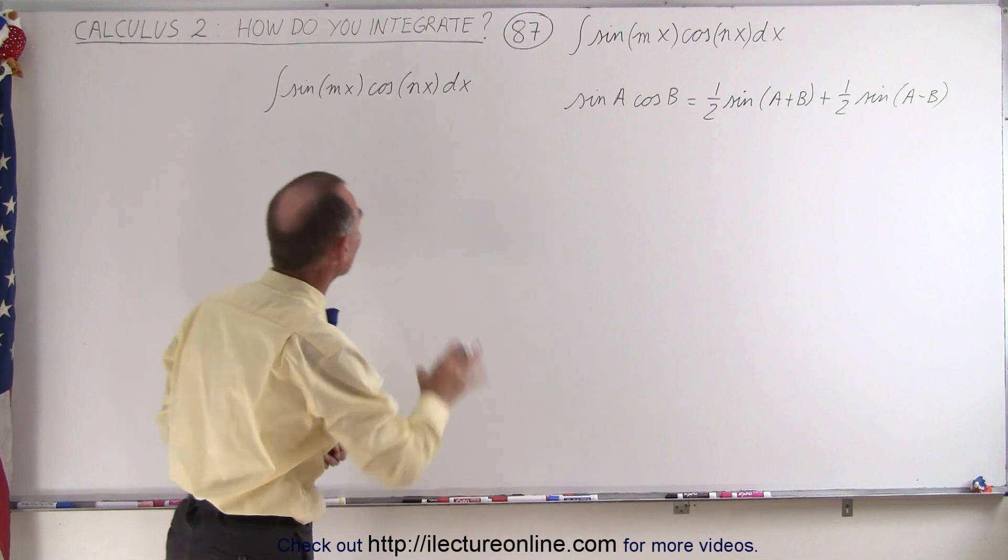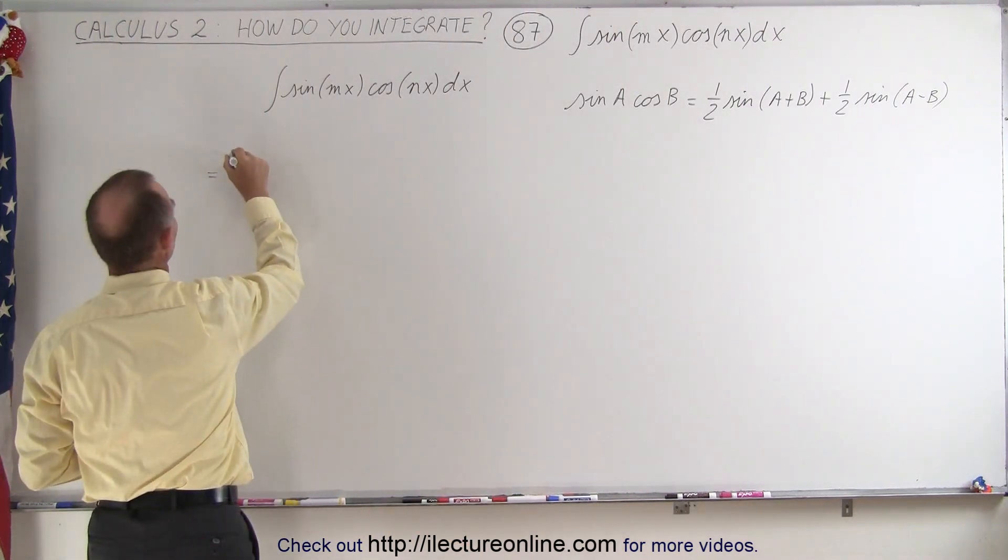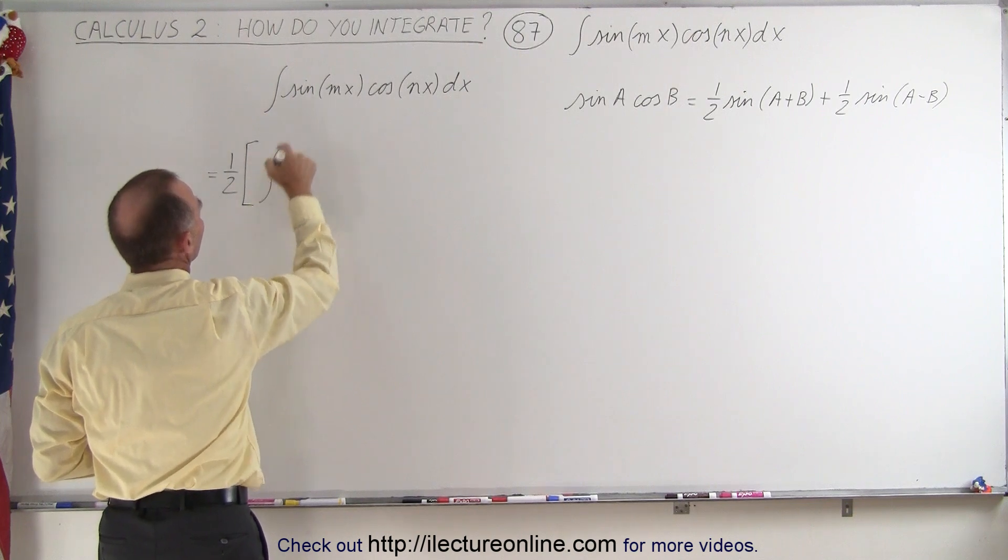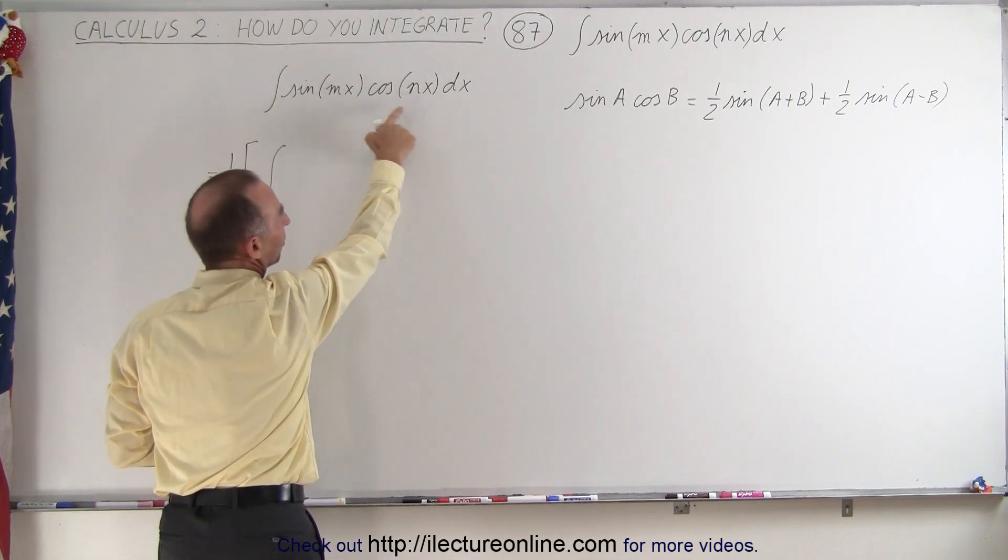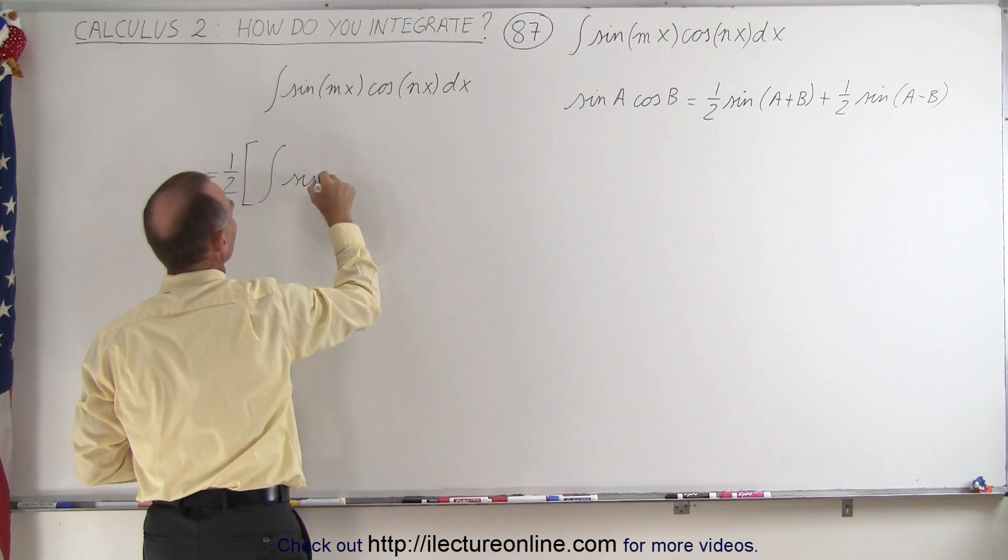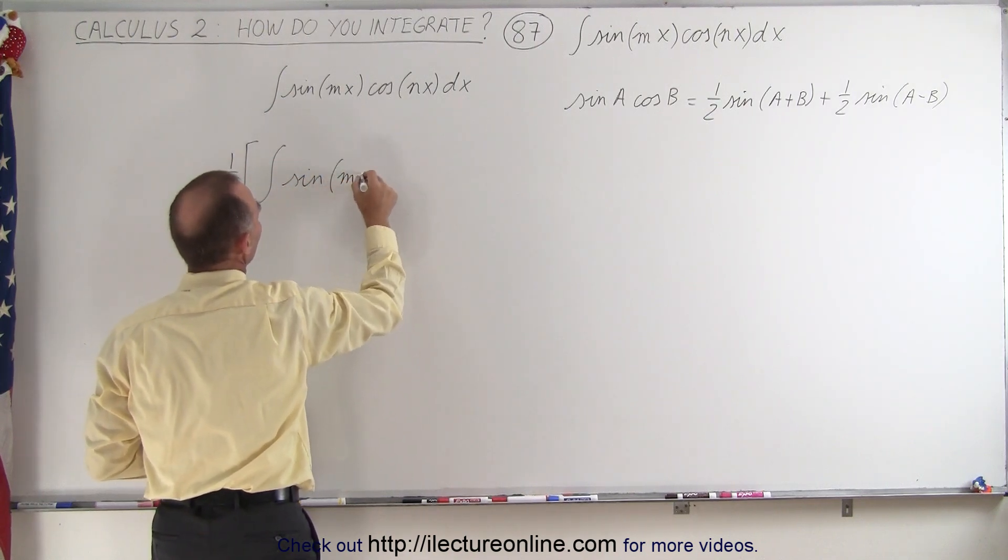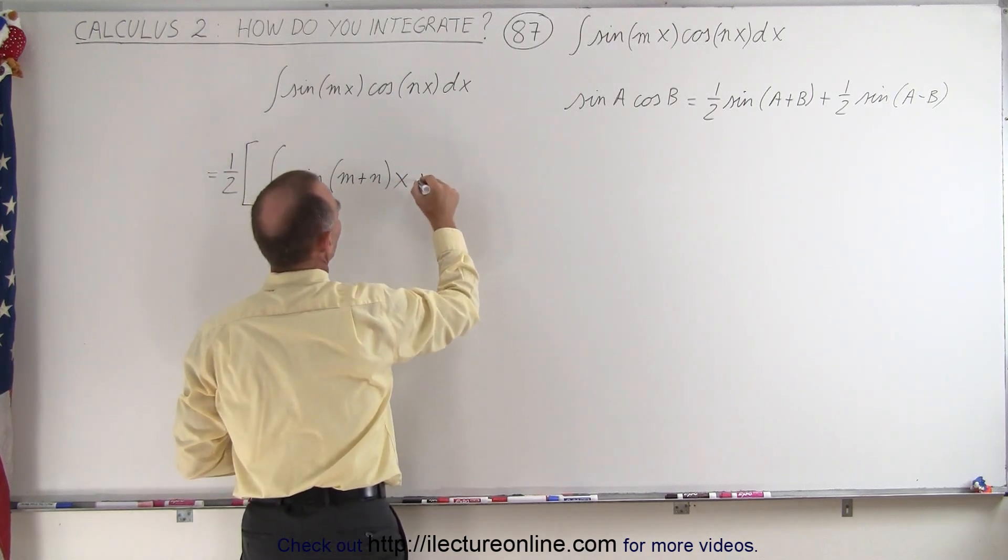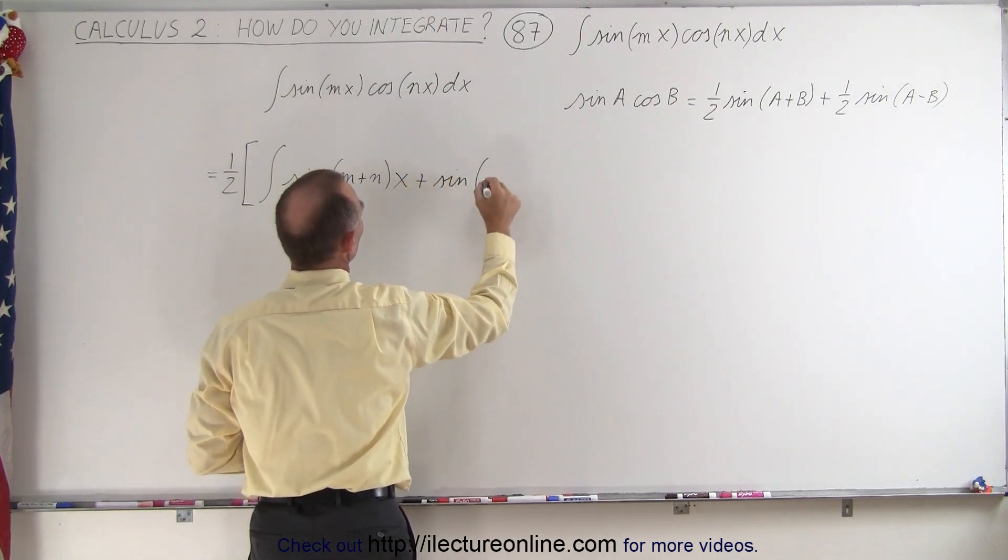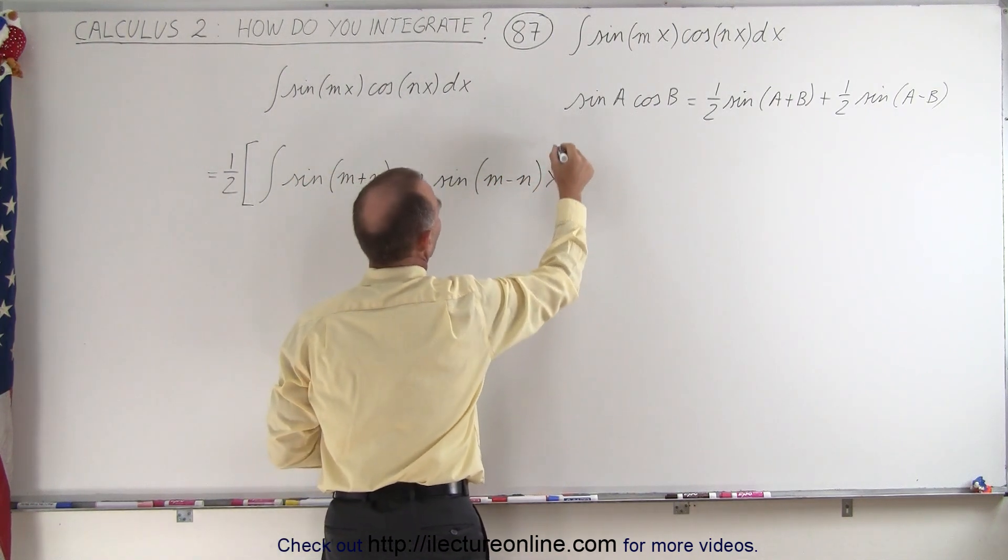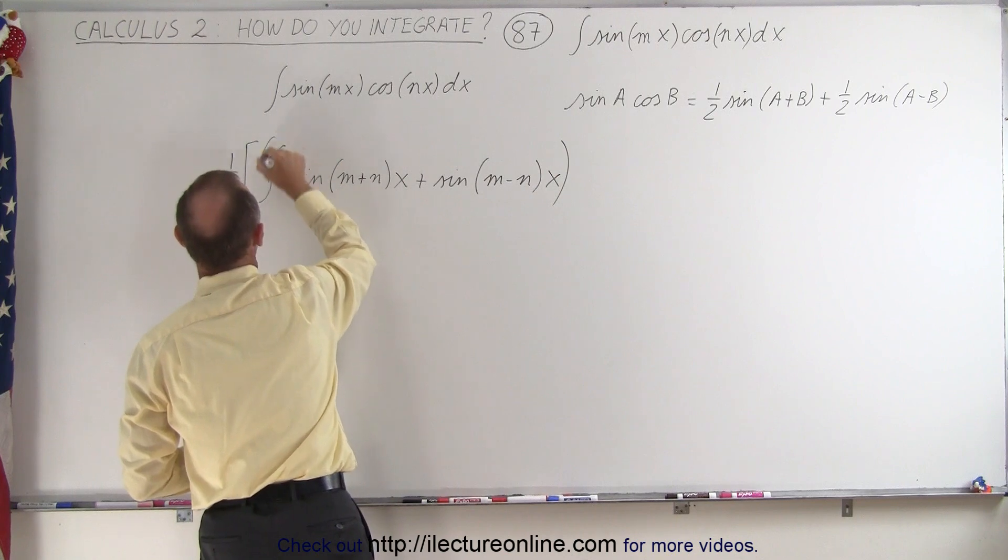So we're going to apply that identity. Let's factor out the one half and now we have the integral. Instead of the sine of mx times the cosine of nx, we're going to have the sine of the sum of the two angles which is m plus n times x, plus the sine of the difference of the two angles which is m minus n times x, and the whole thing times dx.